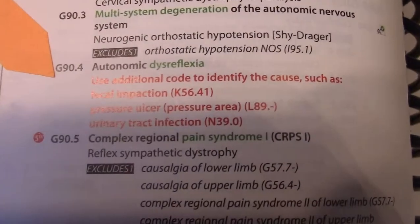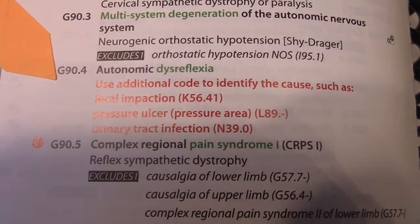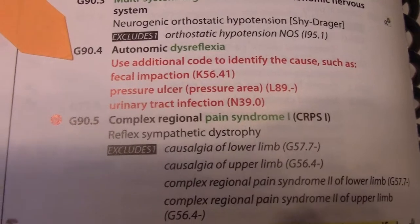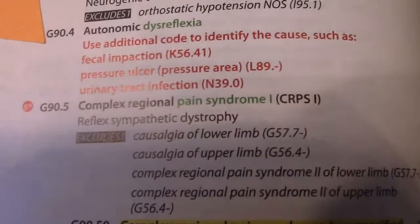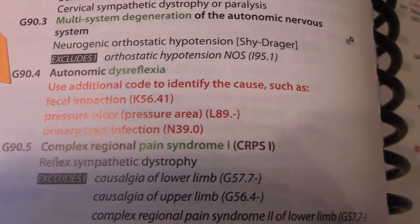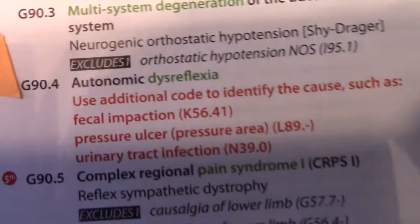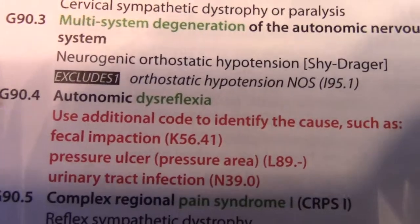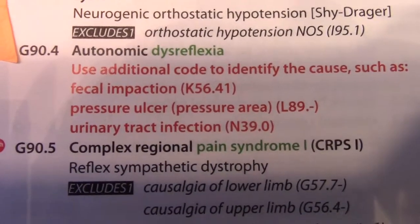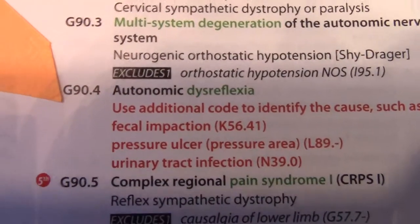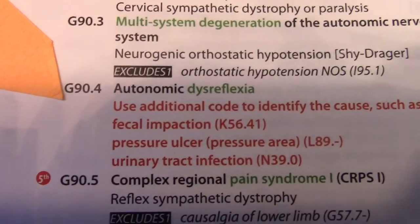Based on that code you then go to the back of the book to your tabular and look up G90.4. There it is — autonomic dysreflexia. Remember, you code the autonomic dysreflexia first, and there's a note that says to use an additional code to identify the cause, such as fecal impaction, pressure ulcer, or urinary tract infection. That's all right there at G90.4.